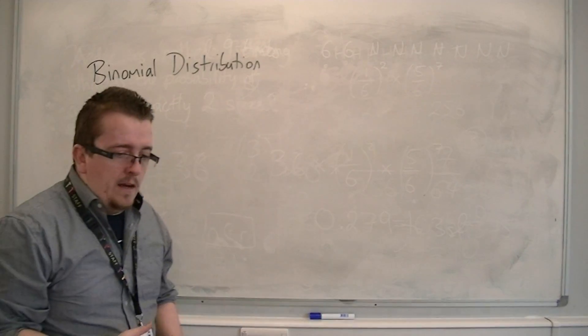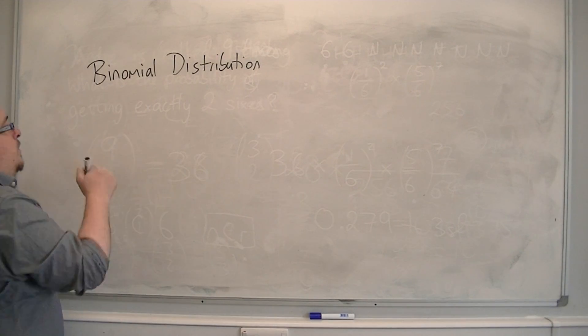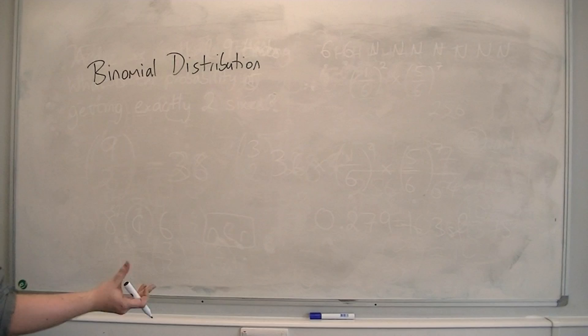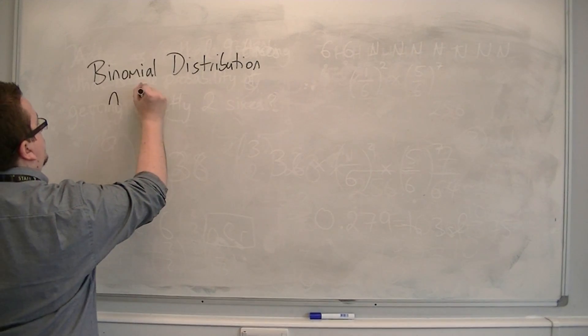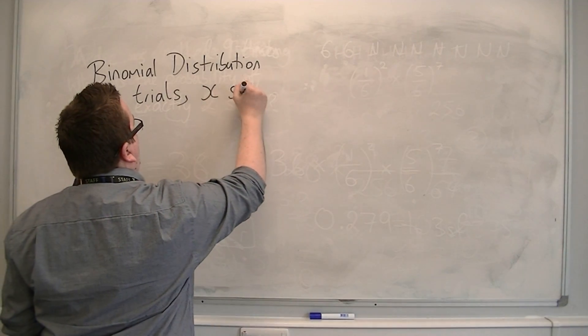Now, we say that if we've got n possibilities, so n trials, and x successes.